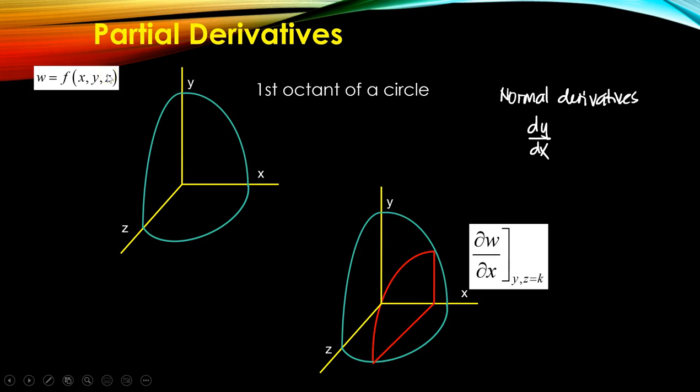For example, you would like to solve for the total cost of painting a room. The room consists of painting the walls, painting the floors, and painting the ceilings. The cost of painting each surface is different. In order to solve for the total cost, you have to account for each of those. In partial derivatives, it's like solving for the cost of painting the walls only, meaning you treat the others as constant — just the cost of the walls without looking at the cost of the ceilings and the floor.